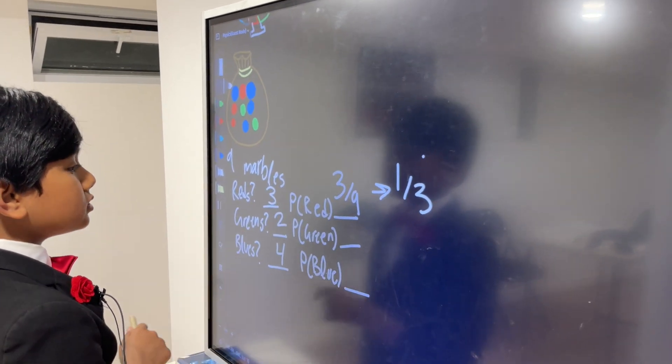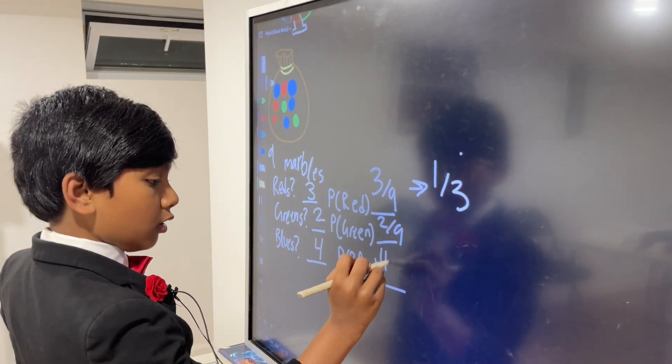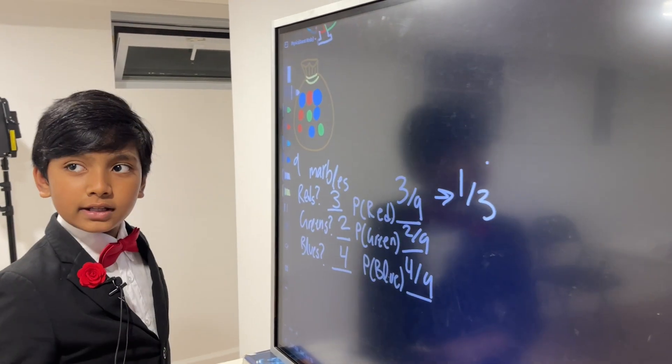What about greens? Well, that would be two over nine, and the blues, four over nine. Are you starting to see a pattern?